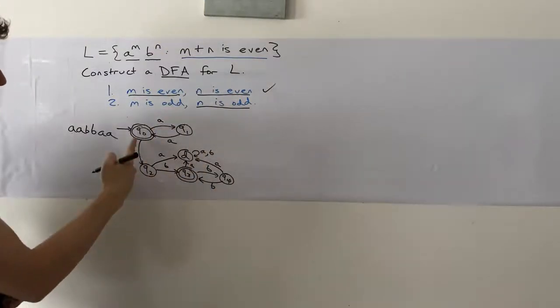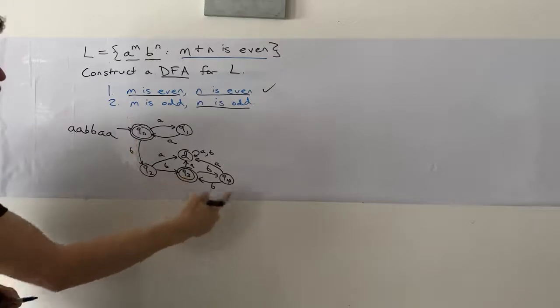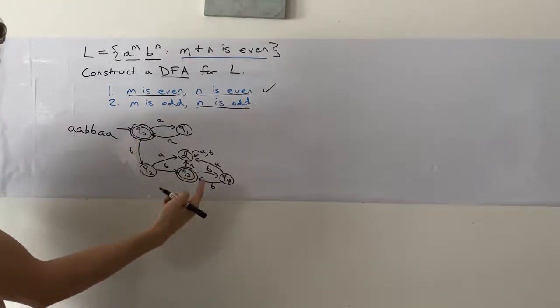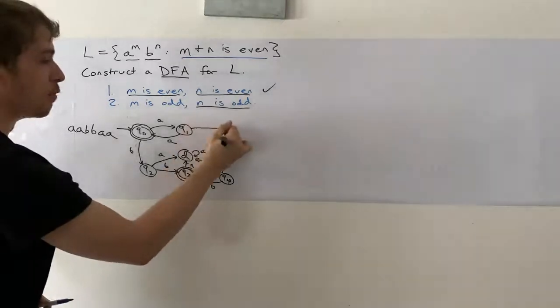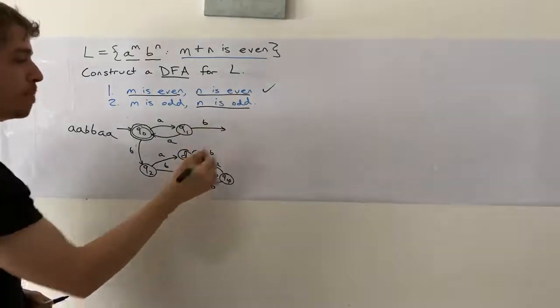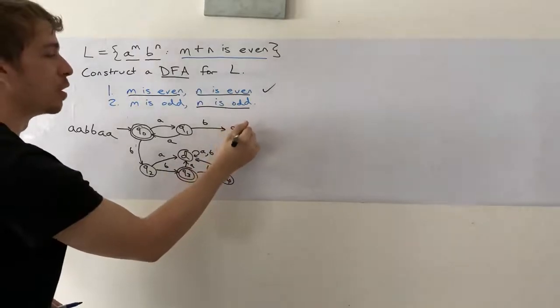So we can do a similar trick that we did down here, but over here. So instead of two B's to get to a two state machine to compute an even number of B's, we're going to do something different.